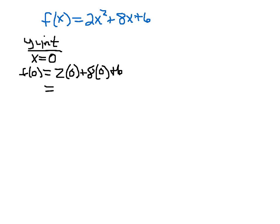which in this case we get 0, plus 0, plus 6, which is just 6. That tells me that my function, when I plug in 0, I get 6. That tells me that the parabola will cross the y-axis at the point 0, 6. That is going to be the coordinates of the y-intercept.